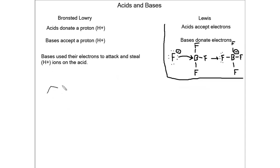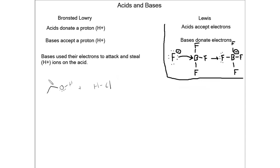Let's draw a Bronsted-Lowry acid-base reaction, showing that bases are going to use their electrons to attack and steal hydrogen ions on the acid. I'm going to draw a couple of compounds and figure out which one is the acid and which one is the base. This compound here is ethanol, and let's say we're going to react that with hydrochloric acid. This is interesting because we actually have a proton on both of our starting materials. It's good to think about the pKa values of those protons. Ethanol is very similar to water — the pKa of this is 15.9.